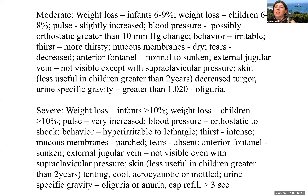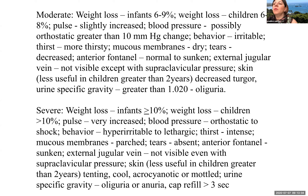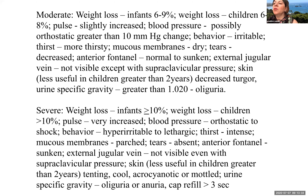Moderate dehydration: infants will have a six to nine percent weight loss; children will have six to eight percent. Pulse is slightly increased. Blood pressure possibly orthostatic, greater than 10 millimeters of mercury change. Behavior may be more irritable. They may be more thirsty. Mucous membranes may be more dry. Tears will be decreased. Anterior fontanelle may be normal to sunken. The external jugular vein not necessarily visible except with supraclavicular pressure. Skin shows decreased turgor, which may be less useful in children greater than two. Urine specific gravity, again, greater than 1.020. Oliguria.